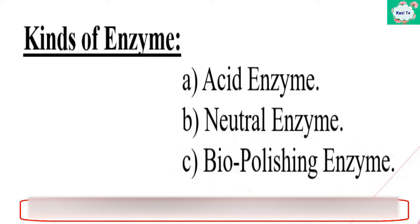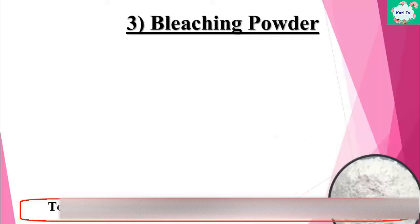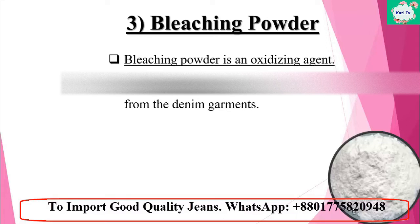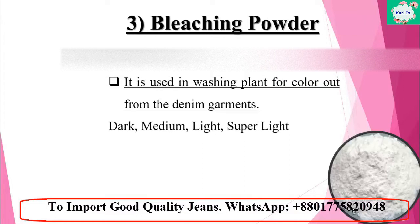Number three: bleaching powder. Bleaching powder is an oxidizing agent used in the washing plant to remove color from denim garments to achieve different shades — dark, medium, light, and super light. Bleaching powder is used based on construction. Two kinds of bleaching powder are used: chlorine bleach and non-chlorine bleach.